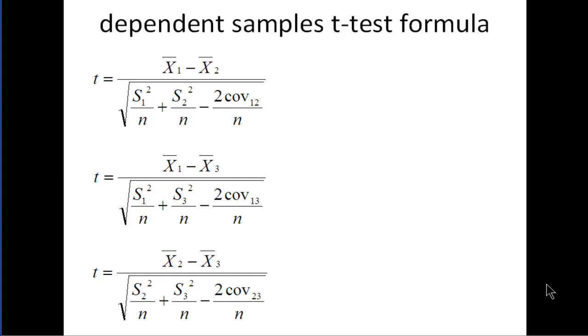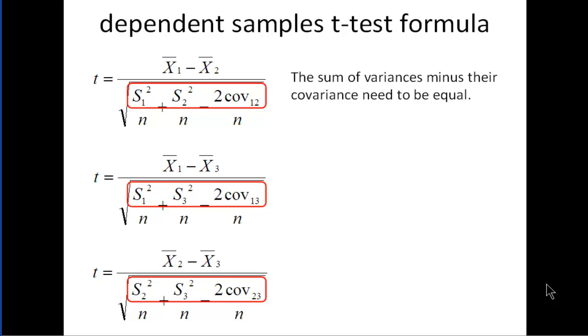But if you just think about it this way, each one of these dependent sample t-tests has its own sum of the variances minus the covariance in each of the three dependent sample t-tests. And you might call this something like the sum of the variances minus their covariances, and those need to be equal to each other. So just like homogeneity of variance in the independent sample t-tests, we need to see the variances as equal.